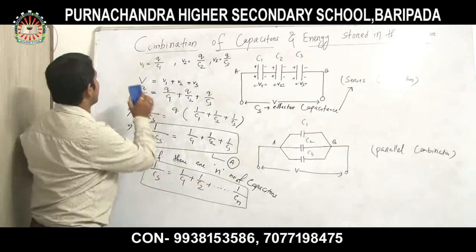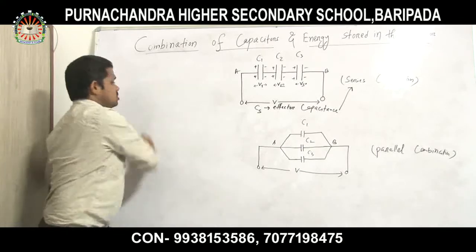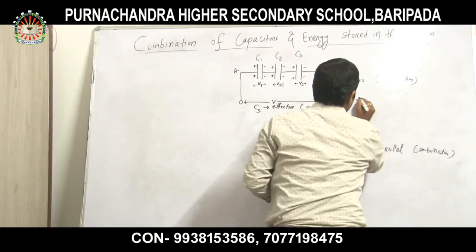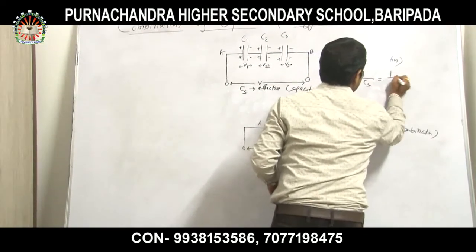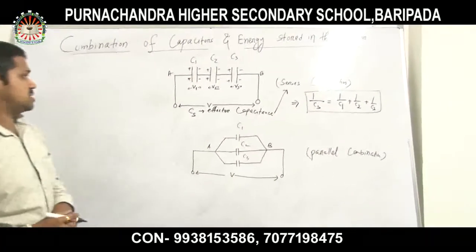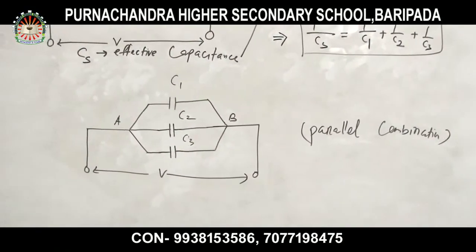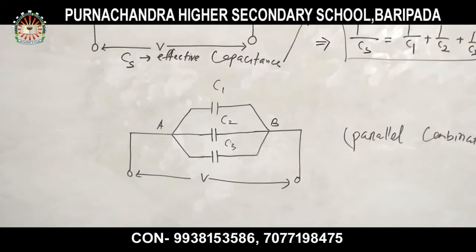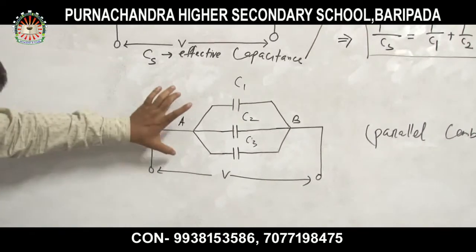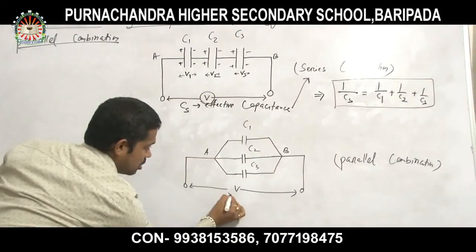Now let us discuss the parallel combination. In the parallel combination, we are also applying a potential V. In series, V was divided into V1, V2, V3. But in parallel, the potential V is the same across all three capacitors.